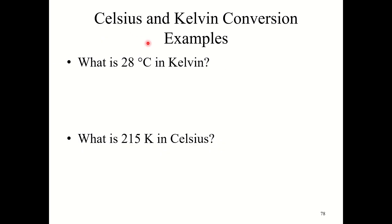Alright, so let's look at a few quick examples. What is 28 degrees Celsius in Kelvin? So if I'm trying to go from Celsius to Kelvin, I would add 273.15 and this would give me the answer 301.15 Kelvin. If I'm doing the reverse, let's say I asked you what is 215 Kelvin in Celsius, I would subtract. So I would take 215 minus 273.15 and this gives negative 58.15 degrees Celsius.